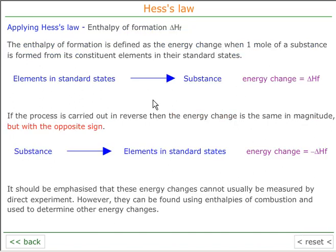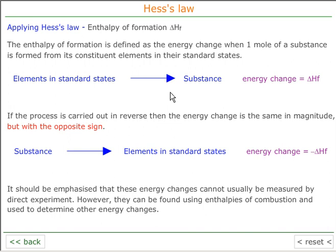We can also apply this using enthalpy of formation. The enthalpy of formation is defined as the energy change when the elements in their standard states make one mole of a substance in its standard state — we call this delta HF. If we carried out the process in reverse, substance to the elements in their standard states, it would be minus delta HF. We can't always measure these directly, but we can calculate them from other factors. It's possible to go via the elements in their standard states from reactant to product, giving the negative of the enthalpy of formation for the reactant and then the enthalpy of formation of the product.